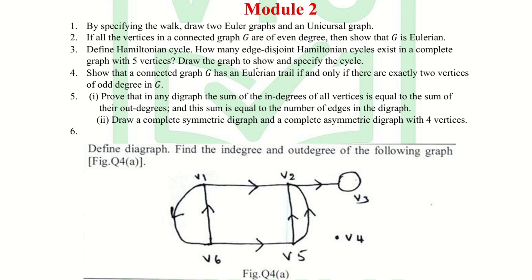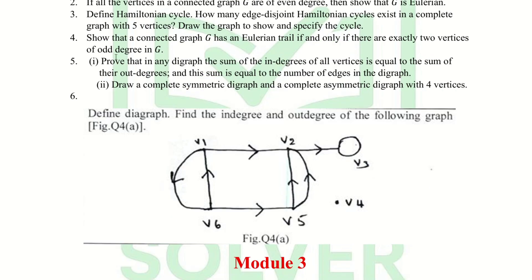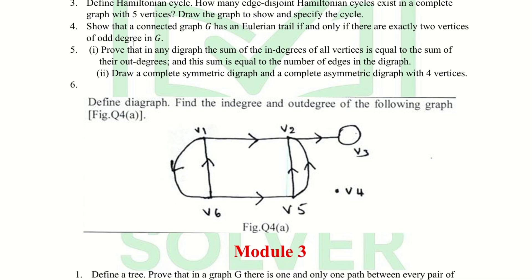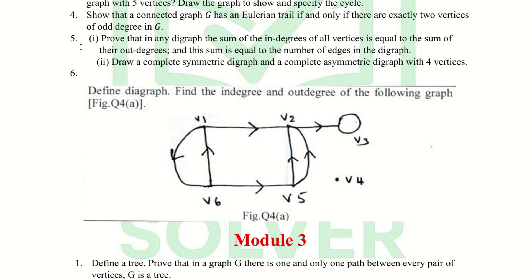The third question is: define a Hamiltonian cycle; how many edge-disjoint Hamiltonian cycles exist in a complete graph with five vertices? Draw the graph and specify the cycle. The fourth question is: show that a connected graph G has an Eulerian trail if and only if there are exactly two vertices of odd degree in G.